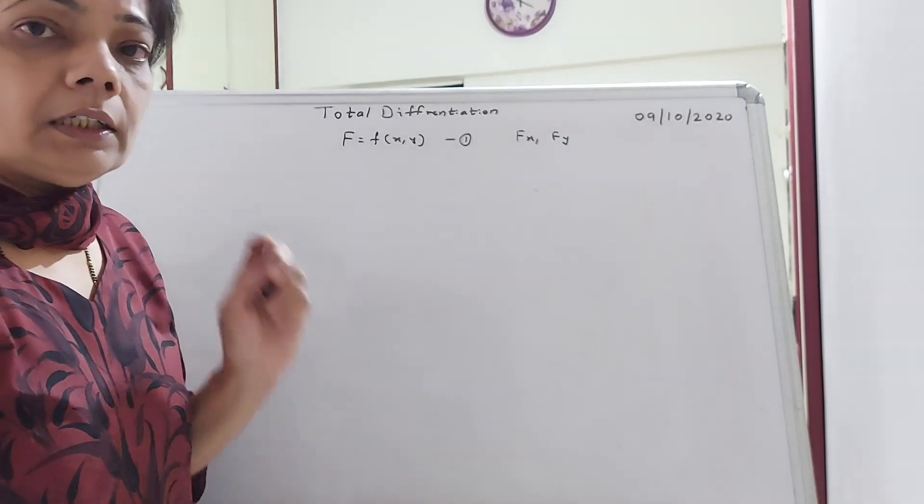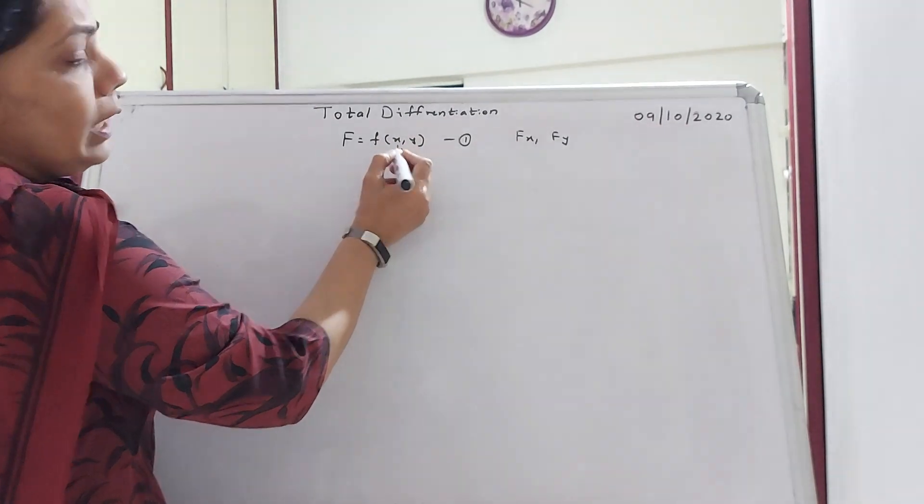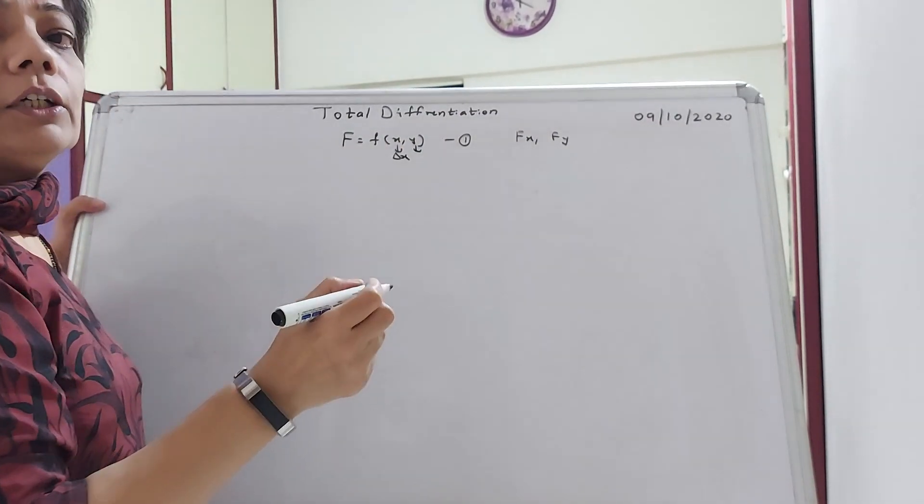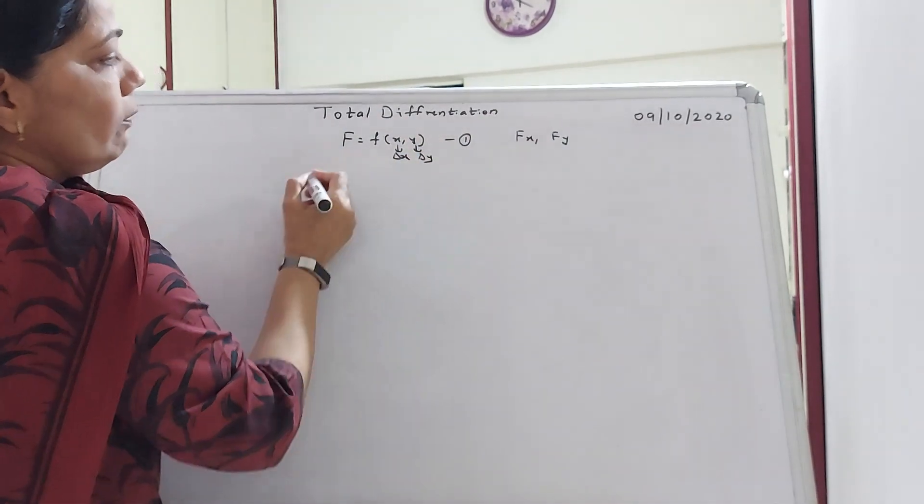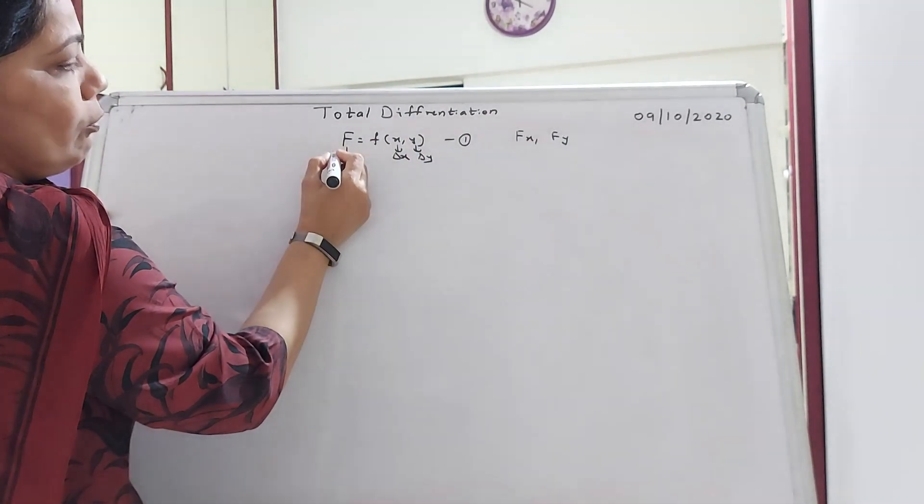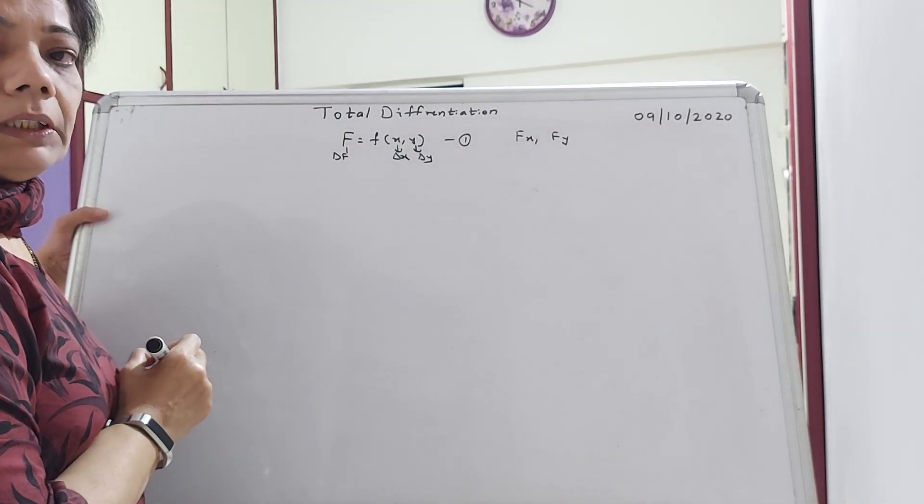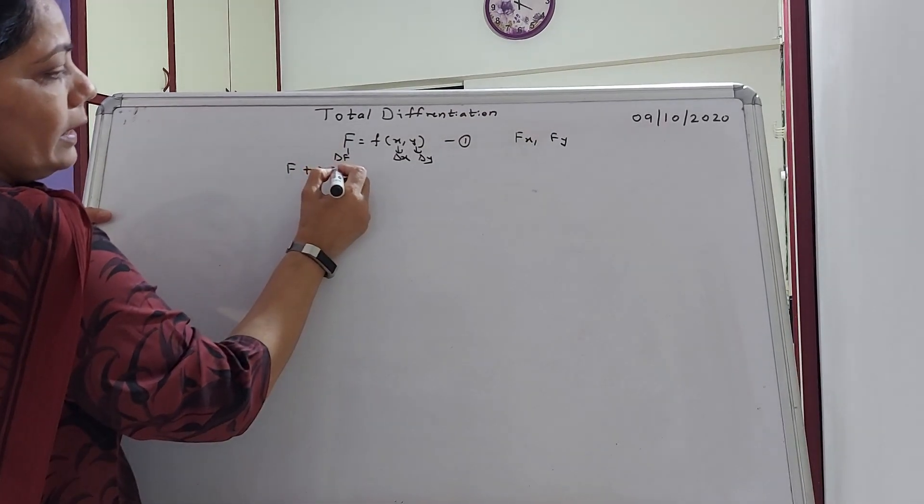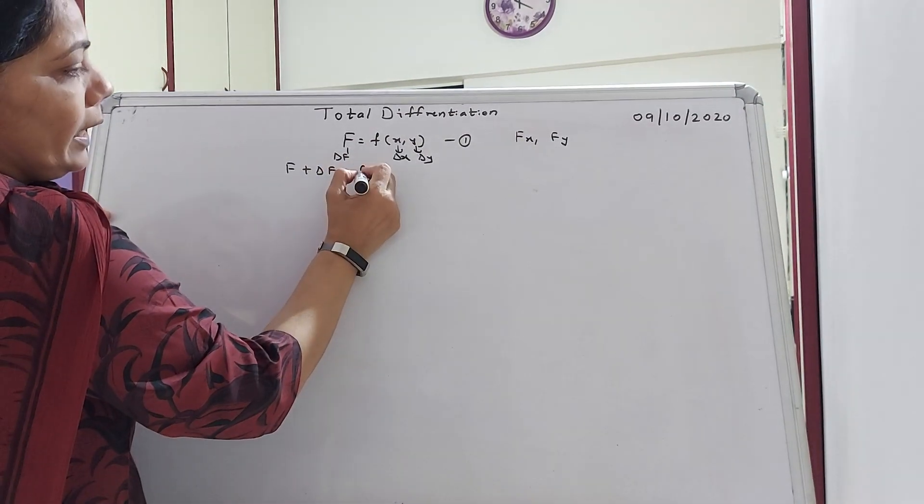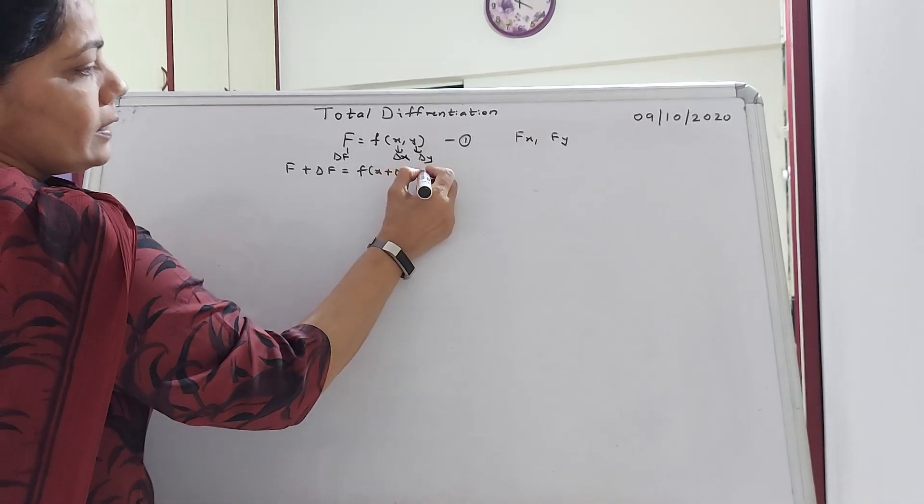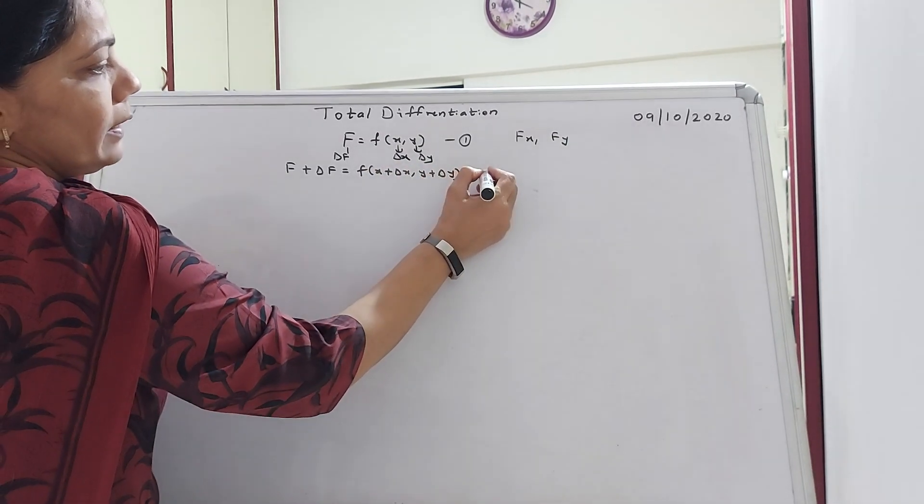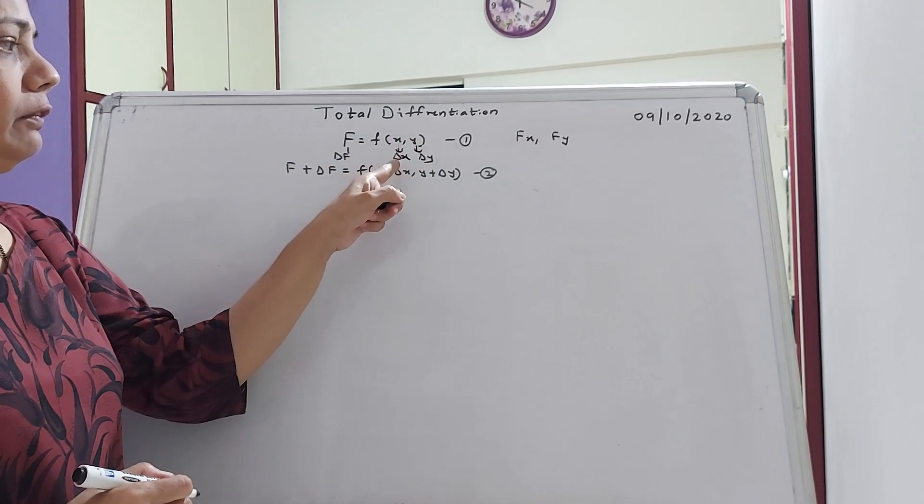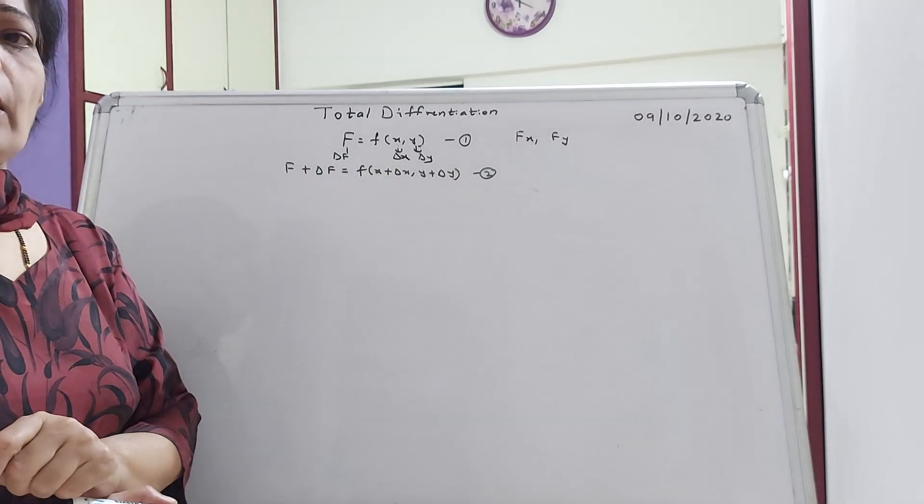Now suppose or we say consider that X has got a small change called delta X. Y has a small change or Y changes by amount delta Y. Then F will change by amount what is called delta F.